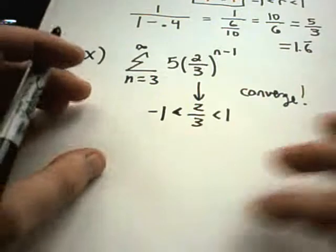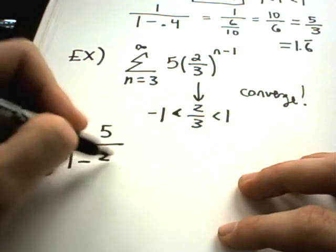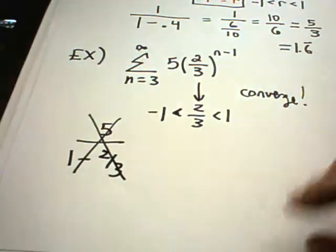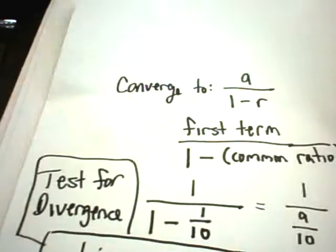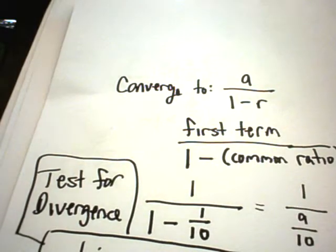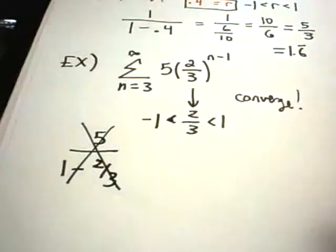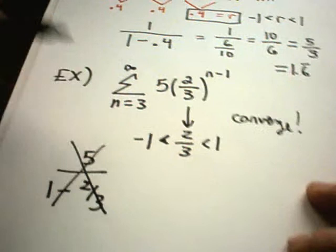And if you just automatically said, oh, 5 is my first term over 1 minus 2 thirds, that's actually going to be incorrect in this problem. Okay? That's why I think sometimes when they write this a over 1 minus r stuff, they'll usually write the geometric series starting at n equals 1. And notice in this case, my n is 3.